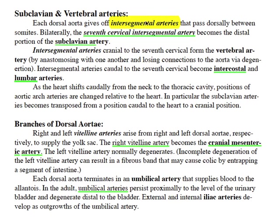The intersegmental arteries given off by the dorsal aorta give rise to the subclavian artery and also the vertebral artery, which is a branch of the subclavian. The subclavian artery comes from the seventh cervical intersegmental artery. Caudal to that, intersegmental arteries form intercostal arteries in the thorax and lumbar arteries. The arteries in the abdomen arise from ventral intersegmental arteries. The vitelline arteries, which supply the yolk sac in the embryo, persist and form the cranial mesenteric artery — specifically the right vitelline artery; the left one will degenerate. The umbilical arteries that supply the allantois and placenta will persist and supply the urinary bladder, degenerating distal to it. External and internal iliac arteries form from buds that grow out to become these major vessels.